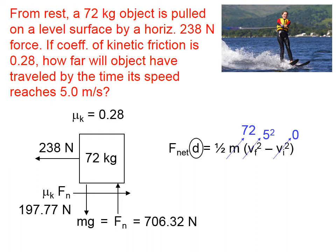So what's the net force? Well, this 706 is irrelevant, because it's the weight down, but it's also the normal force up, so those cancel each other. So the net force is going to be 238 to the left, minus 197.77 to the right, and that turns out to be 40.23, which means everything in this equation is known except D.